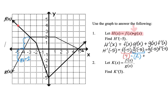Then we add g of negative 5. Back to our graph, g of negative 5 is the y value when x equals negative 5, which is negative 2. We multiply that by f prime of negative 5, the derivative of f at negative 5, which is the slope. At negative 5 on function f, this piece is linear: down 1, right 1, so the slope is negative 1. Therefore f prime of negative 5 is negative 1. We end up with 8 plus 2, giving a final answer of 10 for number 1.